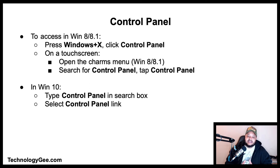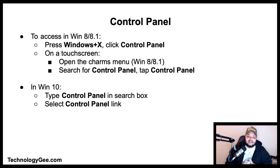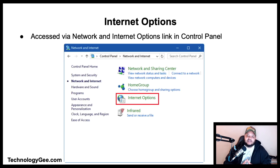To access the Control Panel in Windows 8 and 8.1, just hit the Windows key plus X and then click the Control Panel button. On a touch screen, open the Charms menu and search for Control Panel. In Windows 10, just type Control Panel in the search box and select the Control Panel link.